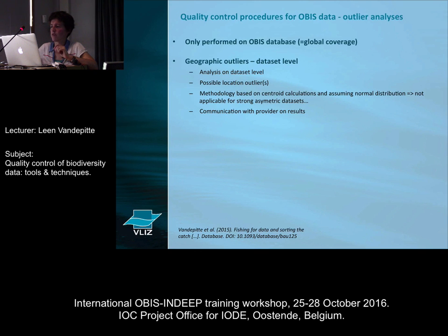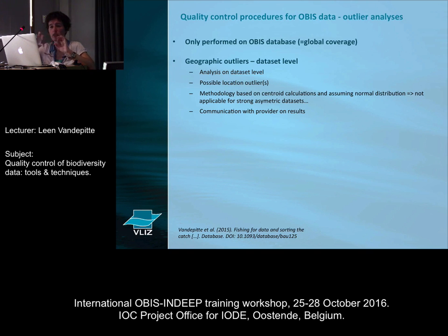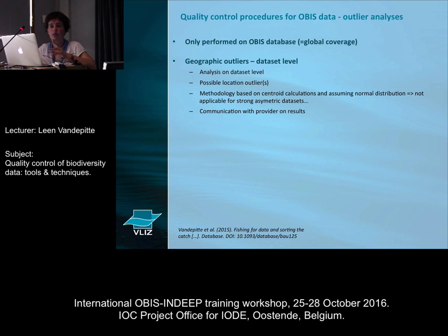Then there's also a number of outlier analyses, which are only performed on the OBIS database. It looks at geographic outliers — the analysis is done on the dataset level, all the locations or stations are plotted, and then the system checks whether one or more points can be seen as outliers. Then providers are contacted with the result.